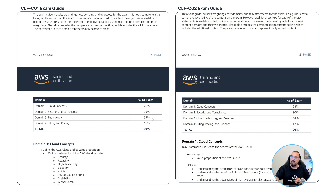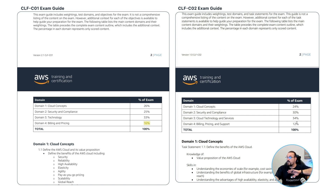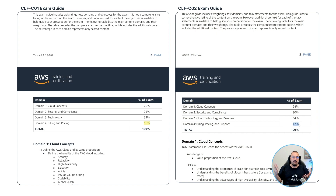Domain 3, technology, was 33% and went up 1% to 34%. Domain 4, billing and pricing, has gone down from 16% to 12%. So the biggest significant change is that security went up by 5% and billing went down by 4%. Does that translate to anything significant? Honestly, that's pretty much a question or two, so it doesn't really matter.